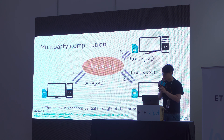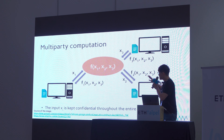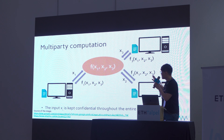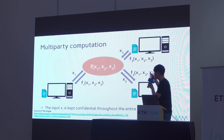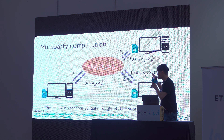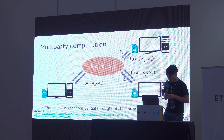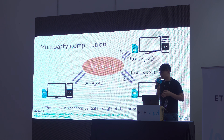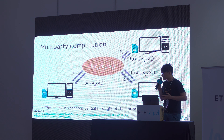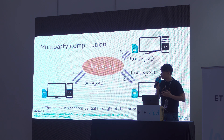For example, there are three parties. They have their own secret inputs x1, x2, and x3. They want to jointly compute the function f with x1, x2, x3 as input, but they don't want to reveal their secret inputs. The motivation of MPC is to solve this problem. MPC ensures that the values of x1, x2, x3 are not revealed during the computation.